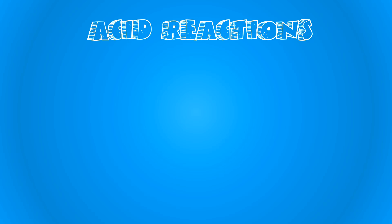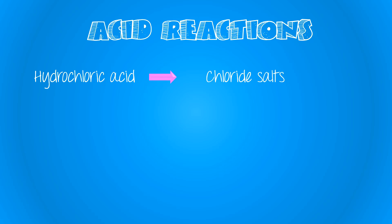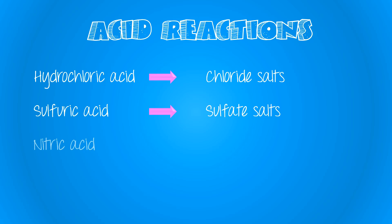It's important that we are able to predict the names of the salts that are formed. The first part of the name comes from the metal that it's reacting with. The second part of the name comes from the acid — hydrochloric acid gives a chloride salt, sulfuric acid gives a sulfate salt, and nitric acid gives a nitrate salt.